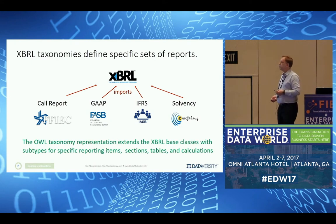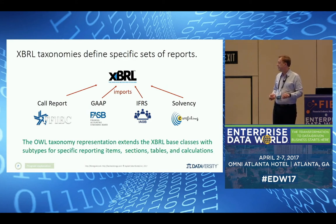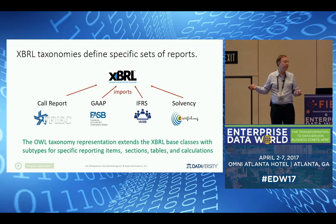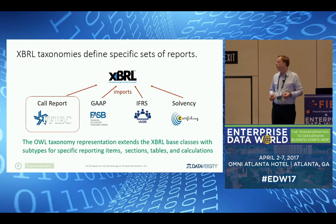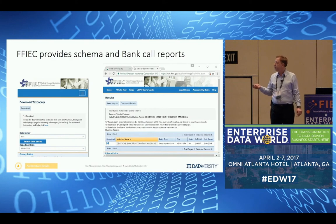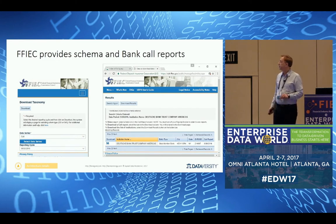So far I have the XBRL framework. A taxonomy defines specific sets of reports — it extends the XBRL base classes with subtypes for specific reporting items: sections, tables, calculations. Very well known is US GAAP XBRL, which is worldwide the most common utilization. I'm currently working on Solvency II, the insurance industry in Europe, which utilizes XBRL for its supervisory regime. Today we look at the Call Report. The FFIEC publishes the schema, the taxonomy, and also publishes instance files of bank reports.